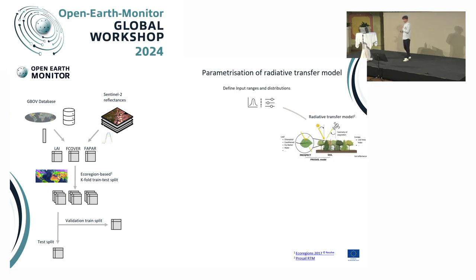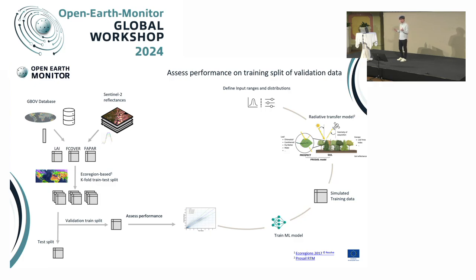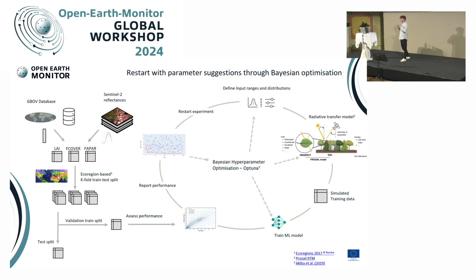This validation train data has an essential role in our modeling loop. We start by defining the input trait ranges, applying the mechanistic model to simulate expected reflectances, and then training a machine learning model to invert this mechanistic model. The in-situ validation data enters the loop here. We assess performance on it and restart the whole cycle, because there are many decisions to optimize: how to define input ranges, how to parameterize the radiative transfer model, which machine learning model to use. We use Bayesian optimization to optimize all these choices.